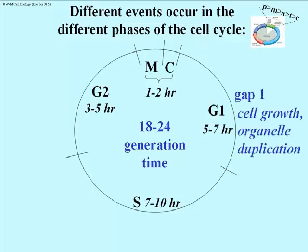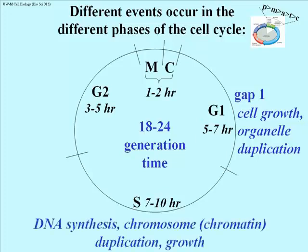In gap 1, cells grow very rapidly. Organelles will duplicate — ribosomes, mitochondria, and if it's a plant cell, chloroplasts and lysosomes. In other words, if you're going to grow a cell, you have to have proportionally as many components in the larger cell as in the smaller cell.